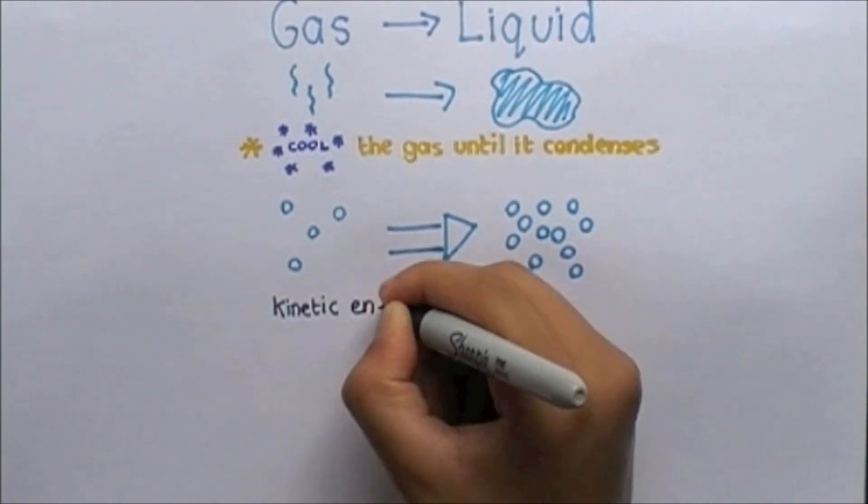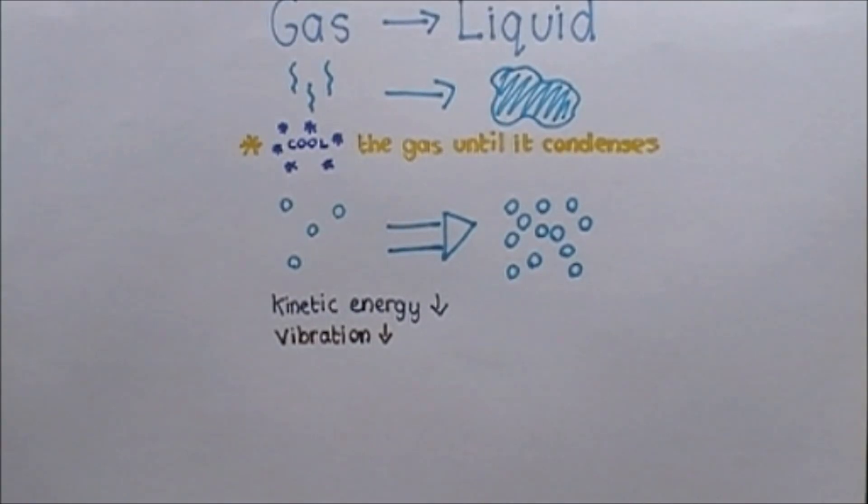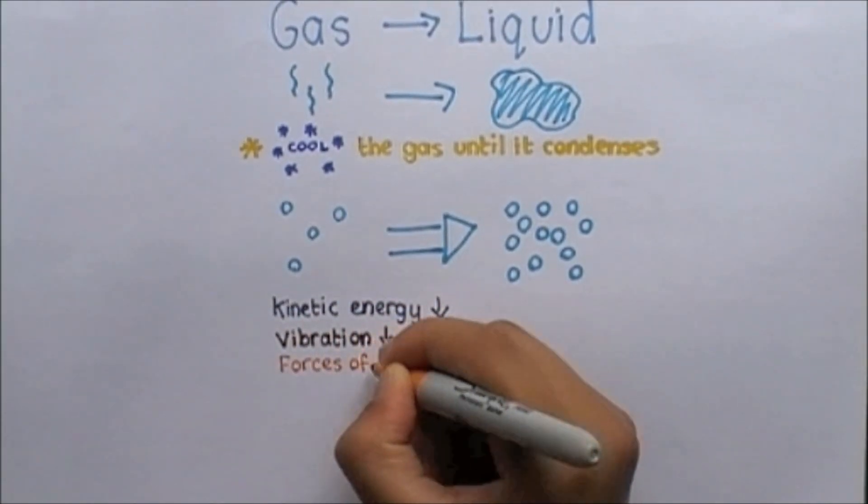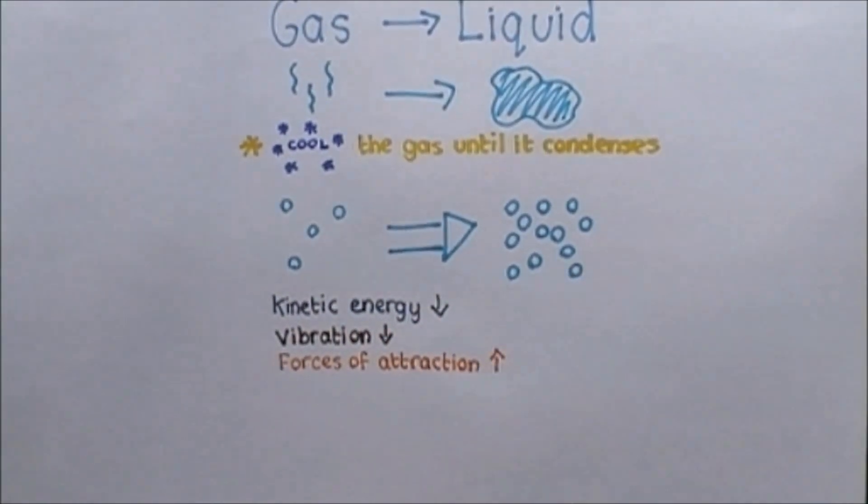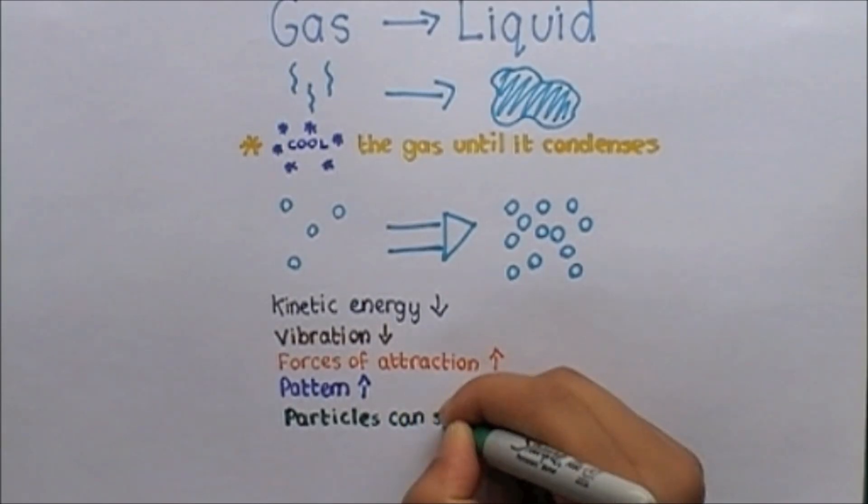When a gas changes to a liquid, the particles lose kinetic energy and therefore vibrate less. This strengthens the forces of attraction and begins to form more of a pattern than was previously there. However, as it is now a liquid, the particles are still able to slide over each other.